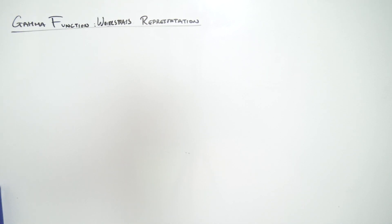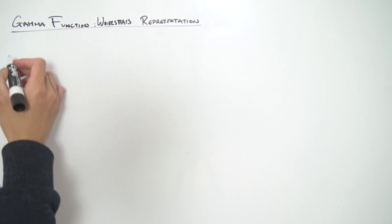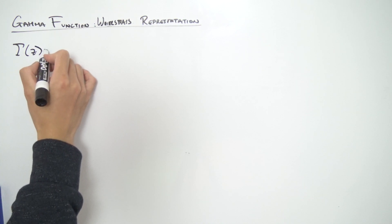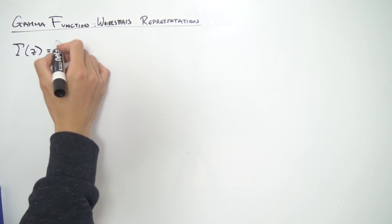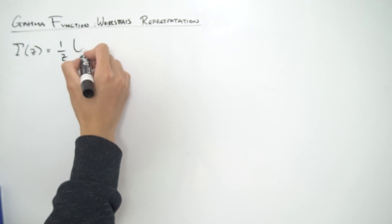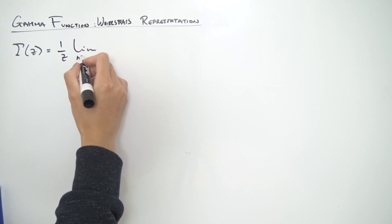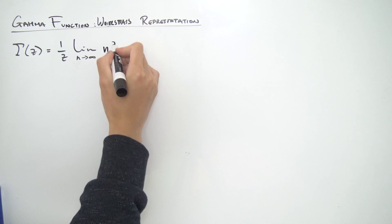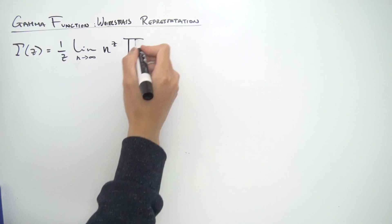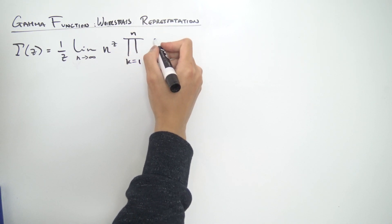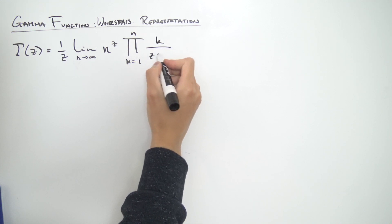Greetings everybody. Today we're going to be deriving the Weierstrass representation for the gamma function. We're going to be starting with the Gauss representation of the gamma function, which is gamma of z equals 1 over z times the limit as n approaches infinity of n to the z, and then we have this product starting from k equals 1 to n of k over z plus k.